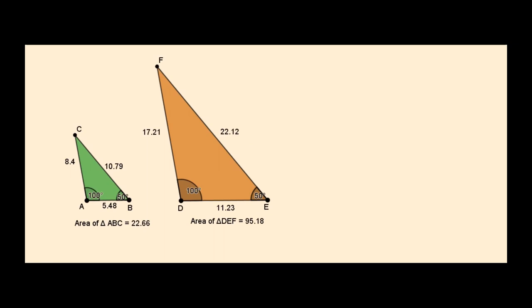These two triangles are similar. I have the areas of these two triangles. Let us consider the ratio of areas of the two triangles, and on simplification I have this value.